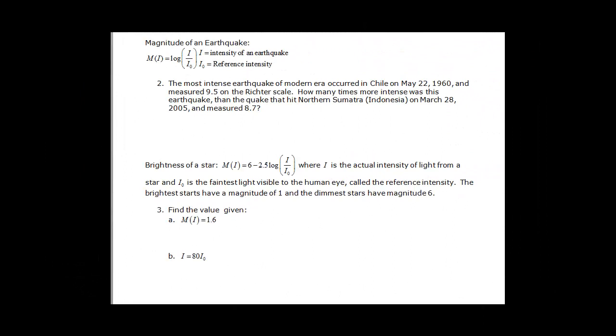Now we come to a magnitude of an earthquake. It's given by this function where the magnitude of intensity is equal to the log of the intensity over reference intensity. This problem is asking us to compare the intensities of these two quakes. So we're going to say that 9.5 is my magnitude. So 9.5 is equal to the log of i over i0. If I convert this, I have 10 to the 9.5 is equal to i over i0. So i is equal to 10 to the 9.5 i0, multiplying both sides by i0 to clear the fraction.